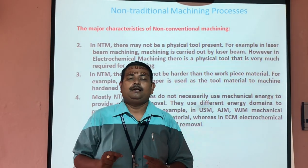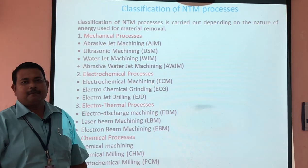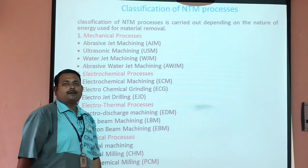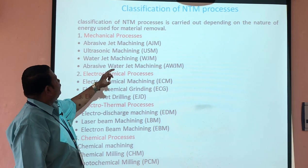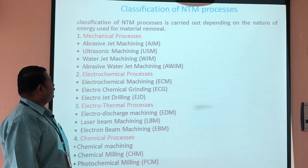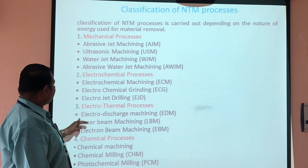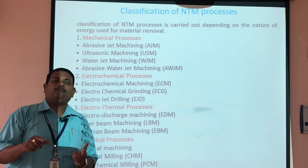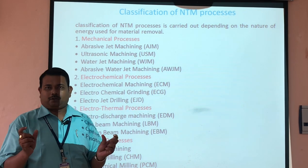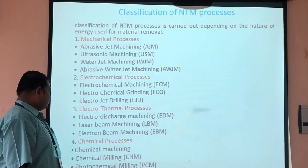Non-traditional machining processes are classified based on various energy sources. In the mechanical energy domain: abrasive jet machining, ultrasonic machining, water jet machining, and abrasive water jet machining. The second energy domain is electrochemical machining, which includes several processes. The third is electro-thermal process, which uses a combination of electrical and thermal energy for metal removal. The last is the chemical process, using chemical energy — examples include chemical milling, chemical blanking, and photochemical blanking.